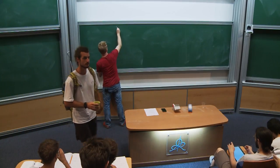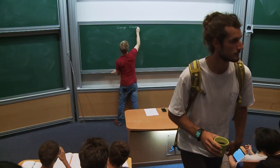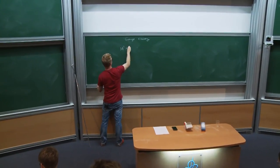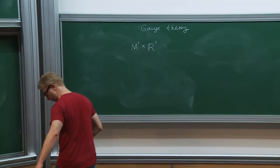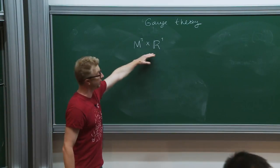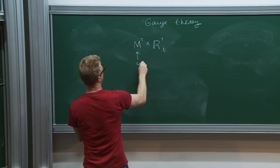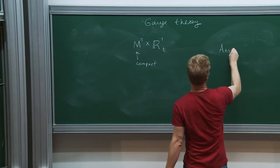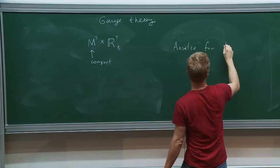Today we'll be studying instantons in gauge theory. We'll start with an exercise of sorts. We'll take the space-time to be of the form of a product of a 3-manifold and the timeline — let's say it's compact — and we'll try an ansatz for the gauge field.